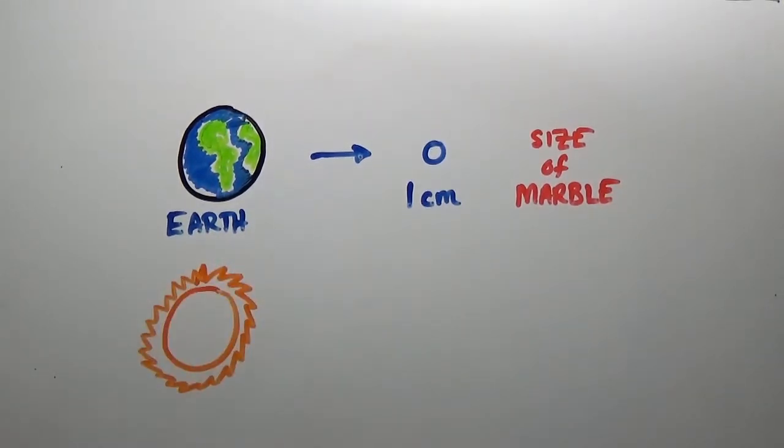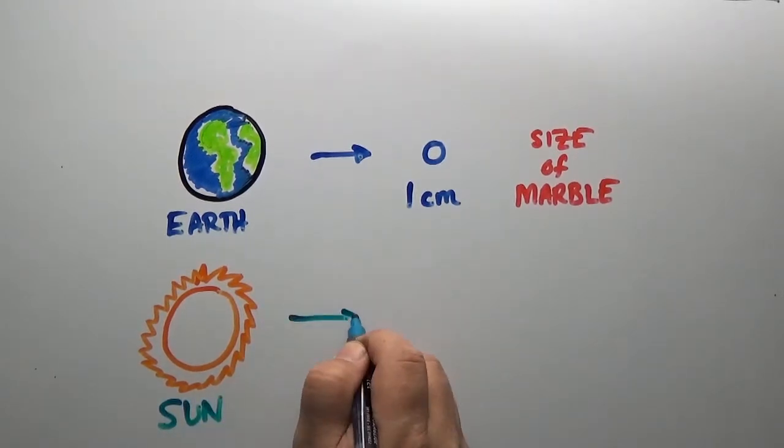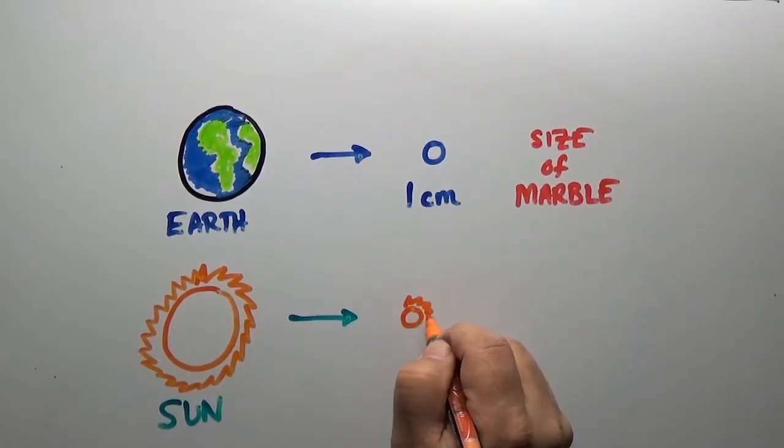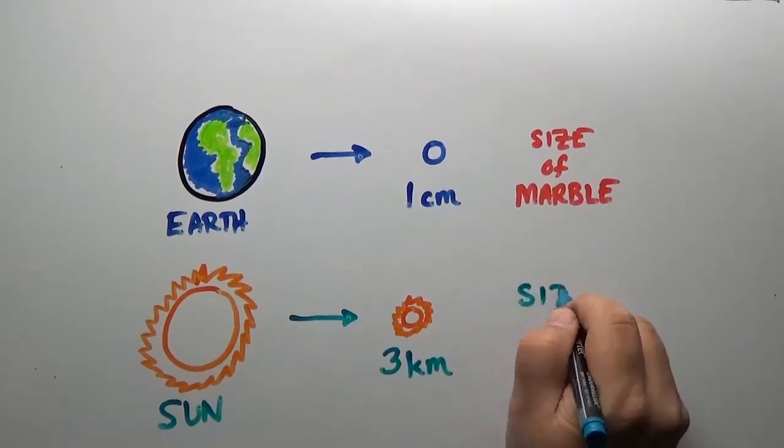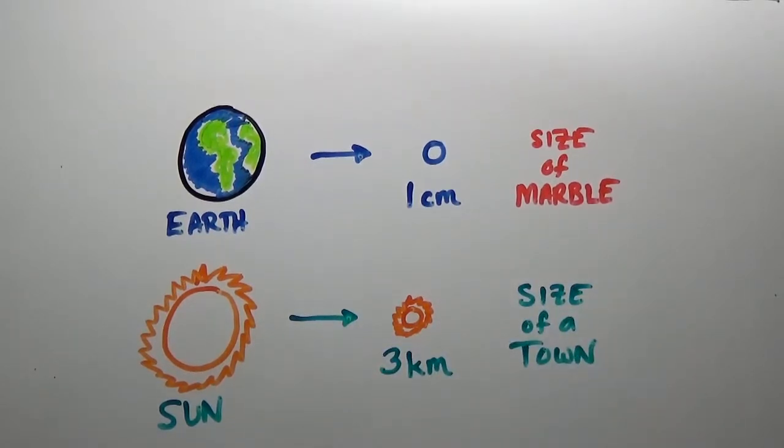On the surface of the Sun, gravity is already almost 28 times stronger than on Earth, but if you shrunk it down to just three kilometers across, the size of a small town, light could not escape from the surface.